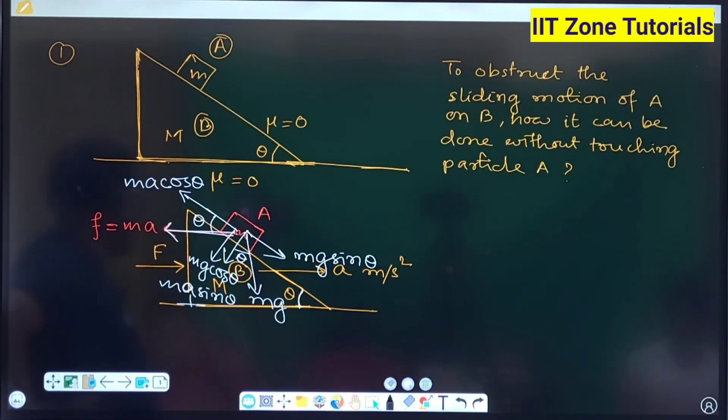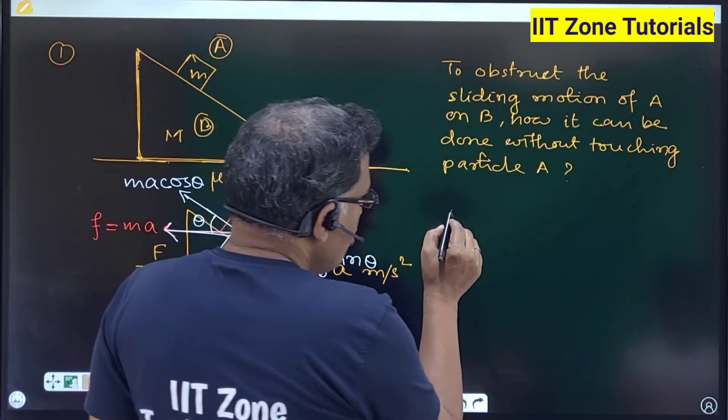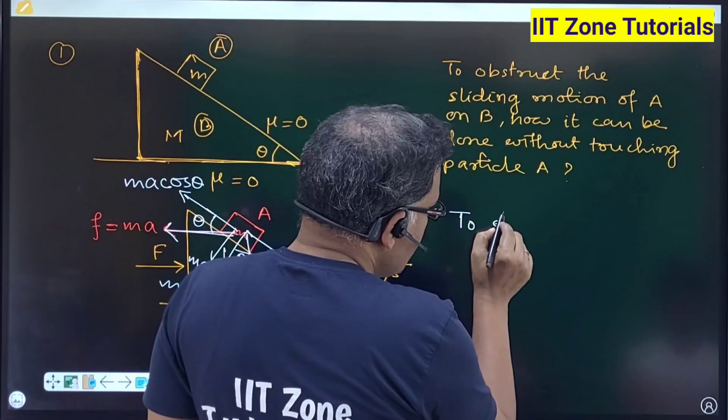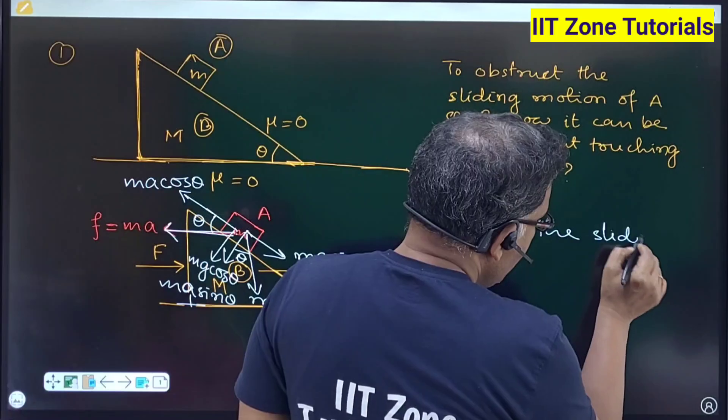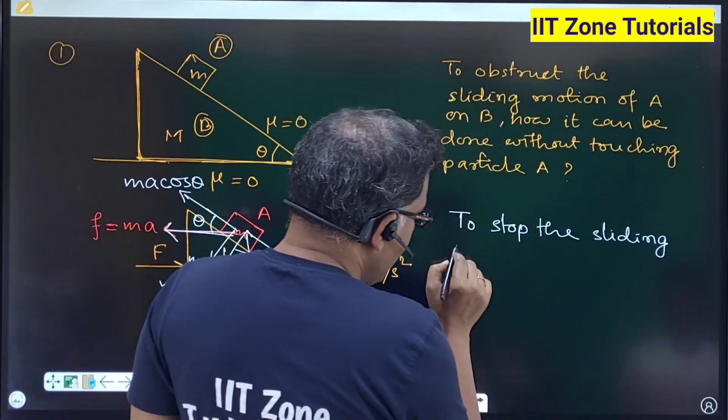will be equal to Mg sin theta then only the mass small m that is the block particle A will be relatively at rest on the surface of capital B that is capital M, right. So that means to stop the sliding motion